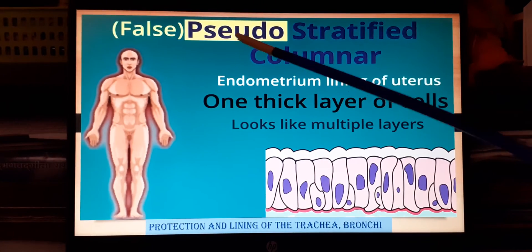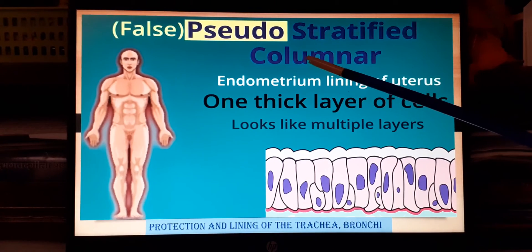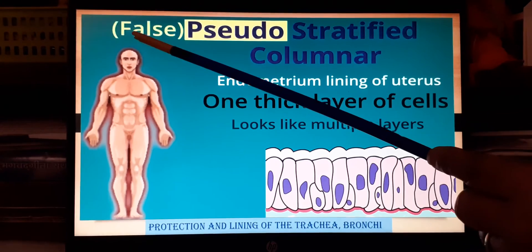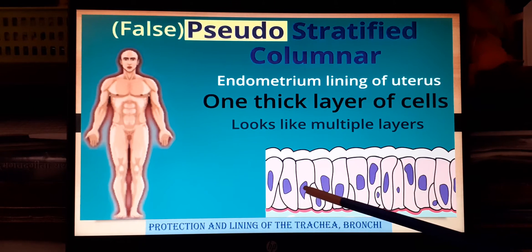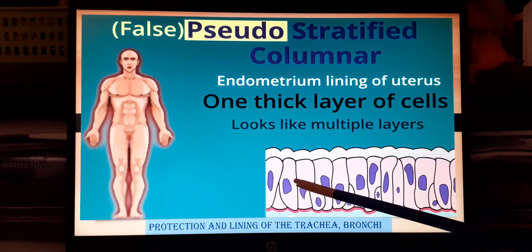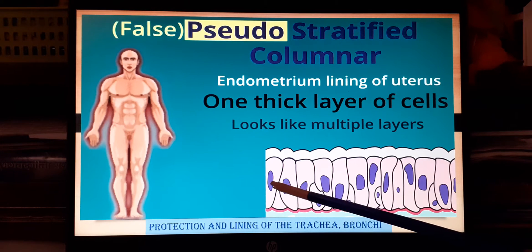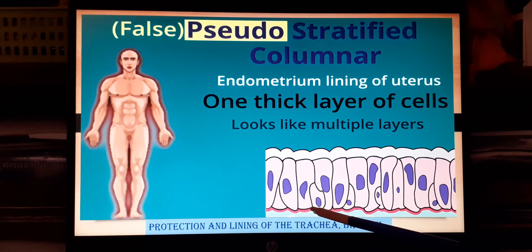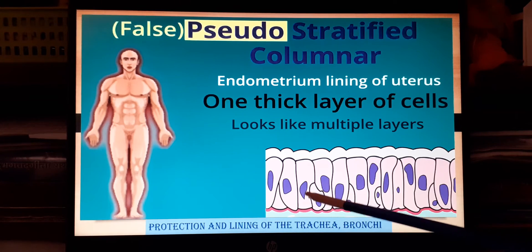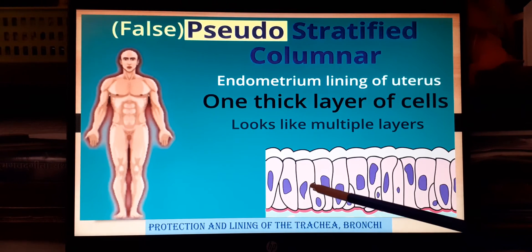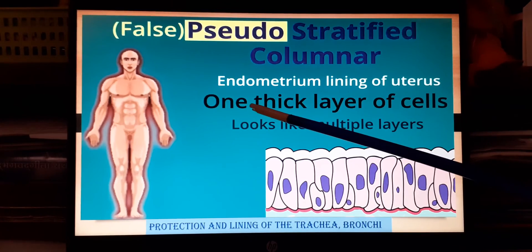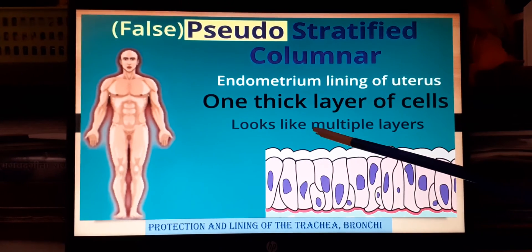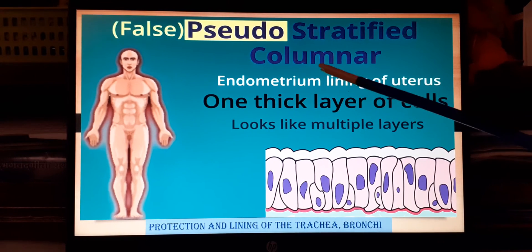The next category is pseudo-stratified columnar epithelium. 'Pseudo' means false — at first glance it appears multi-layered, but all cells rest on the basement membrane and rise from the same level. However, their heights differ — some are short and some are long — making it appear layered. It is actually one thick layer only.